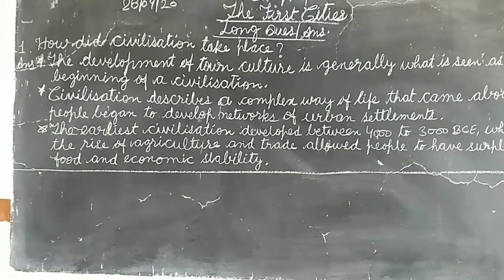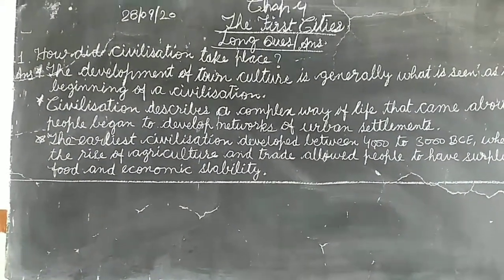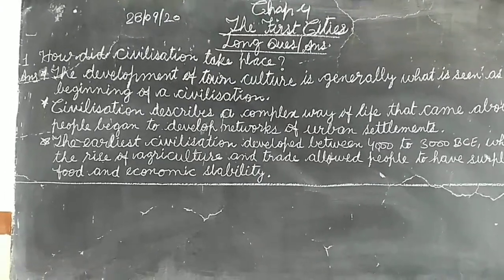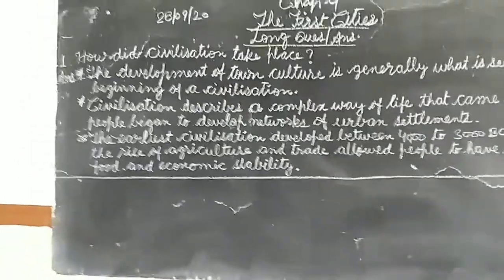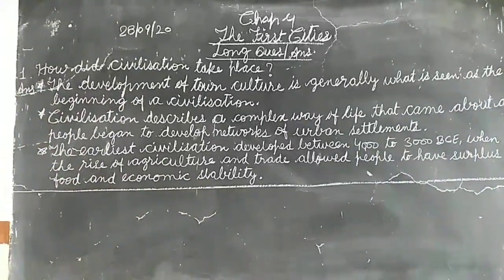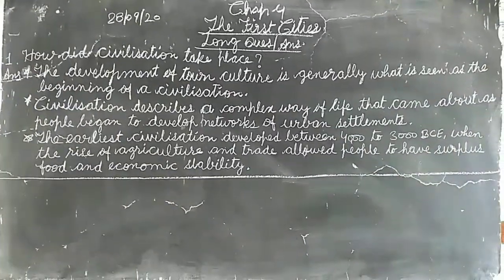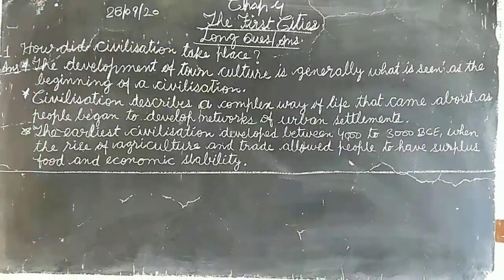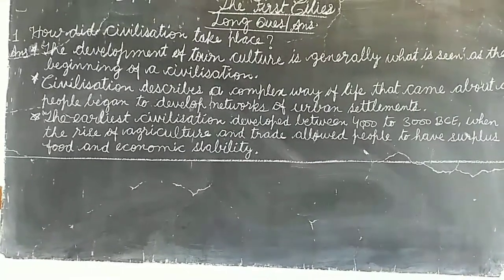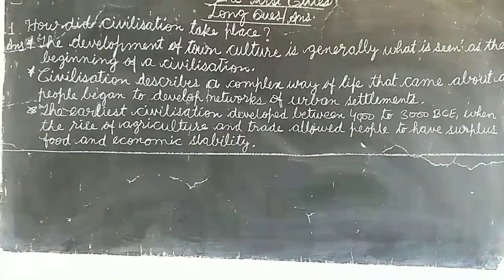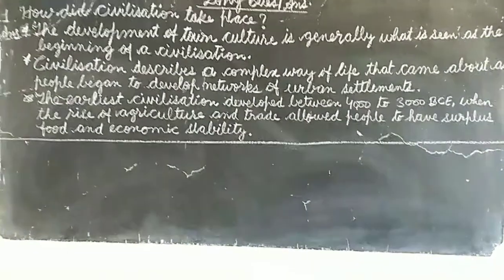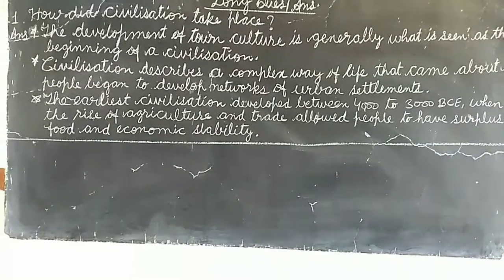Second point: civilization describes a complex way of life that came about as people began to develop networks of urban settlements. When they started developing cities and towns, that was another way of civilization.